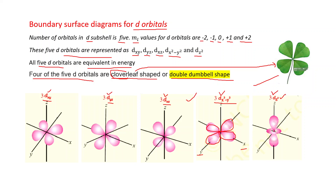The shape of 3dz² is different from the remaining four d orbitals. In this case, the lobe is oriented along the z axis, and there is a ring in the xy plane.